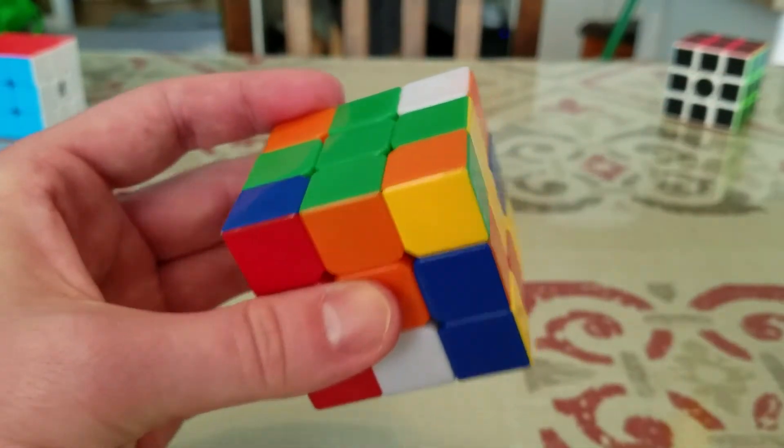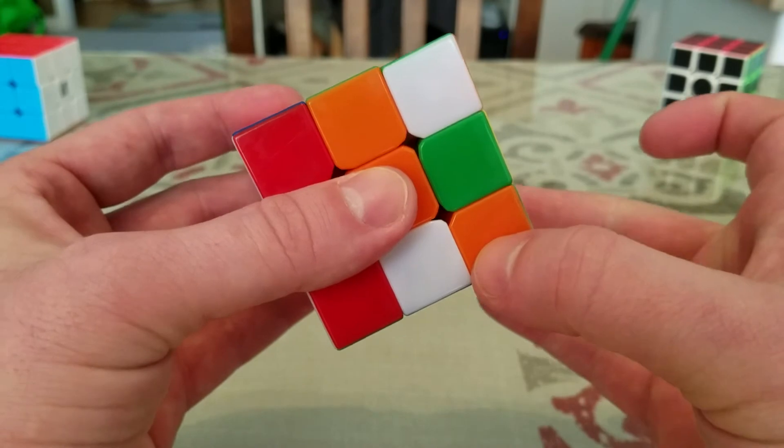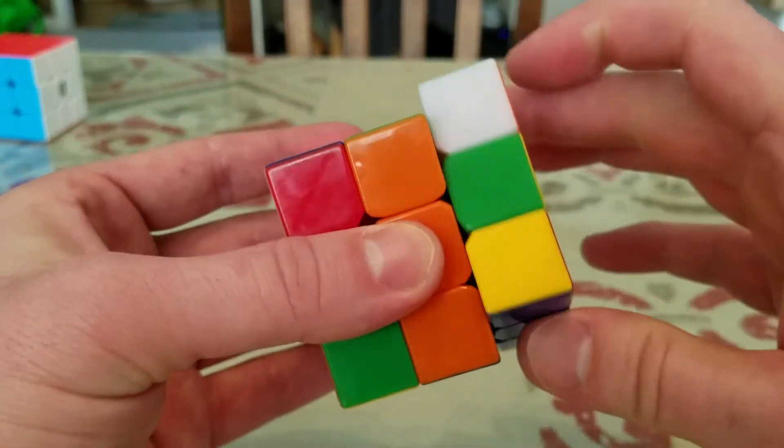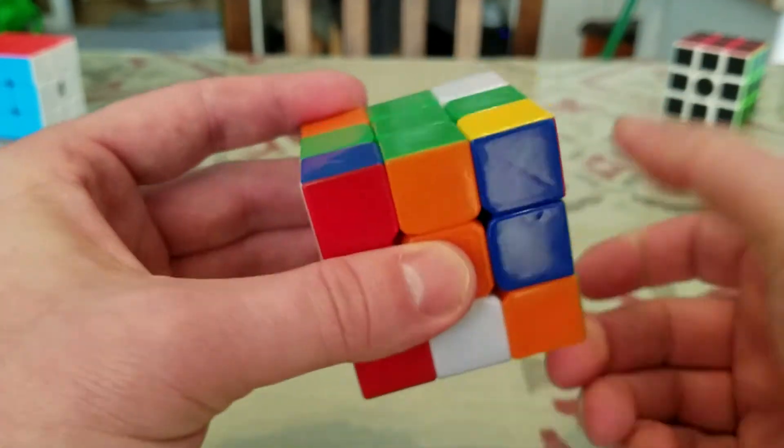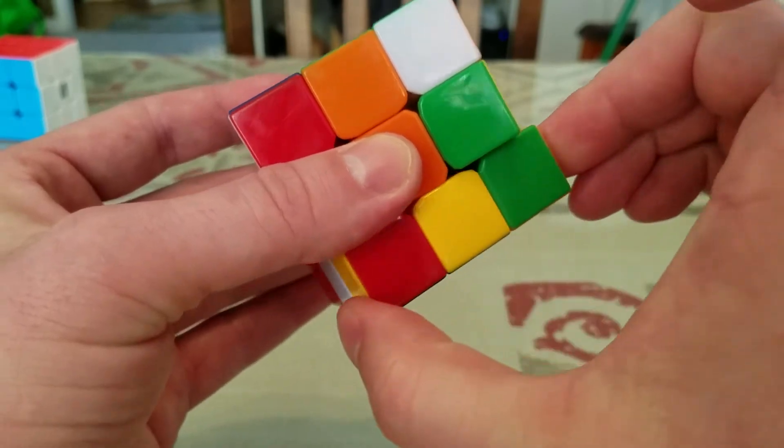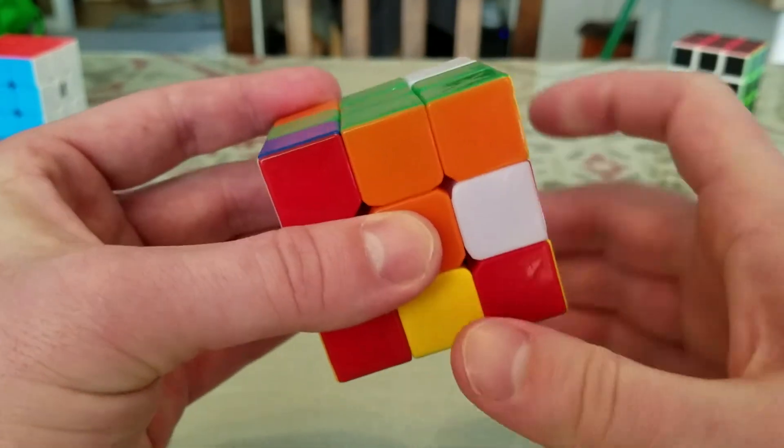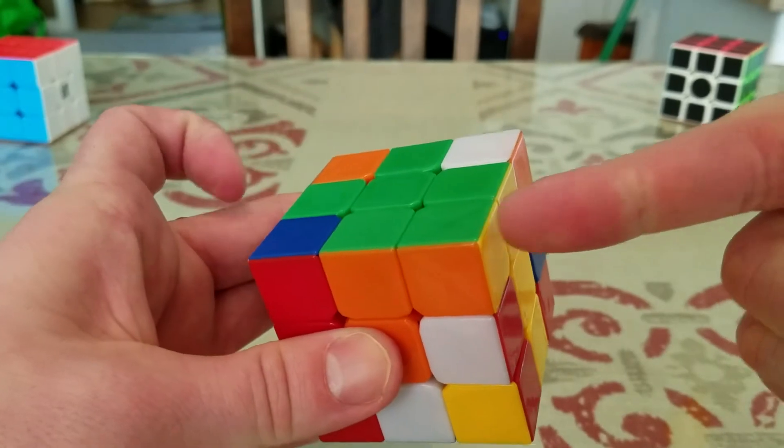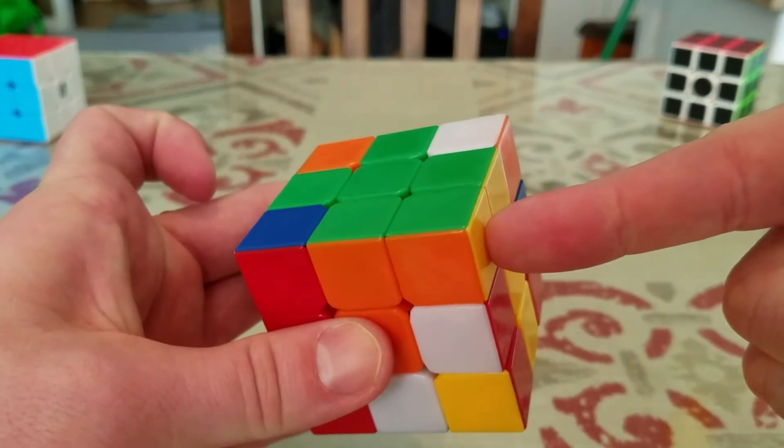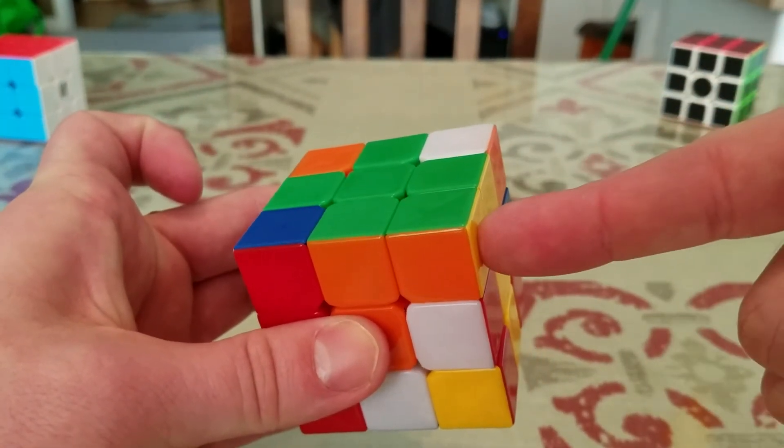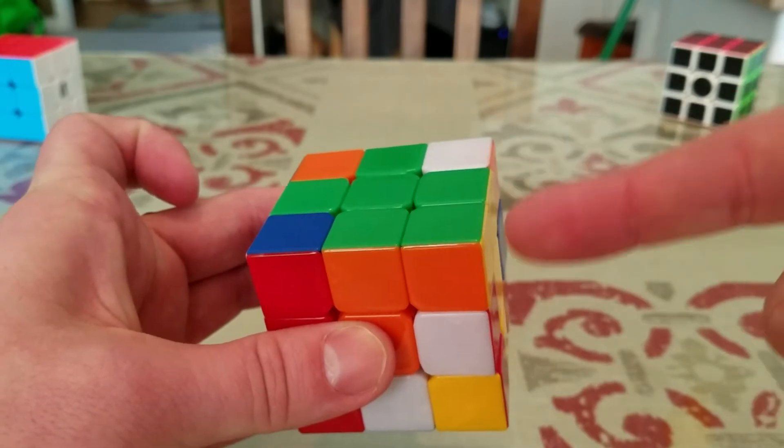That was the third one. We're going to do one more. Down, bottom, right, up, down, bottom, right. And now, after several attempts, this piece is in the correct spot. So we've solved one of the corners.